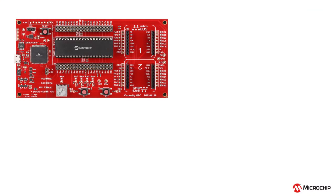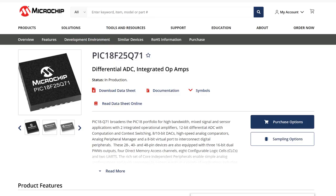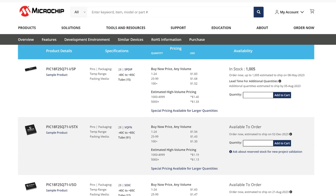If you're using an HPC board, that will either be 28 pins or 40 pins. And if you're using an LPC board, it will be 8, 14, or 20 pins. When you've selected the appropriate part, you can select this link and navigate to Microchip Direct in order to order your sample microcontroller.